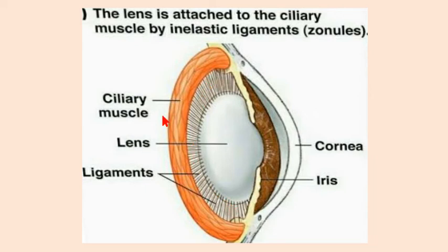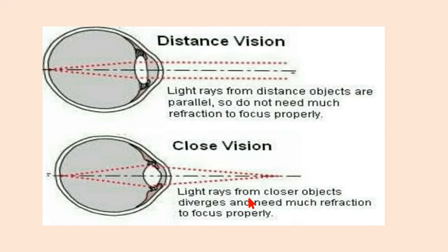These ciliary muscles and ligaments play a very important role in changing the shape of the lens to focus on near and distant objects. When we are observing things at a distance, light rays from distant objects are parallel, as you can see.